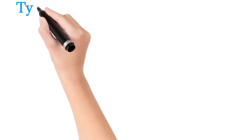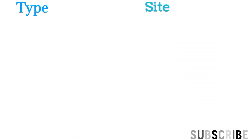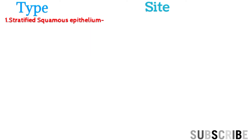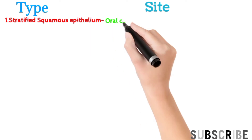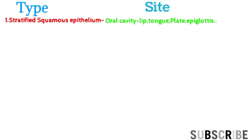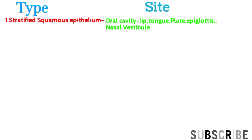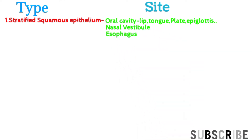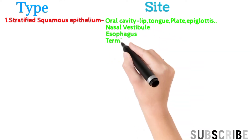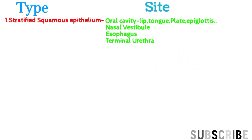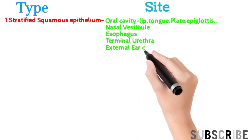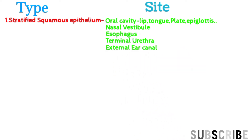Stratified epithelium types and their sites: stratified squamous epithelium is present in the oral cavity, lip, tongue, palate, epiglottis, nasal vestibule, esophagus, terminal urethra, and external ear canal. Its function is protection and secretion.